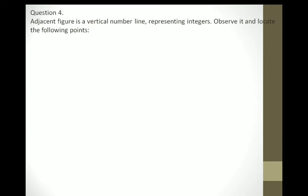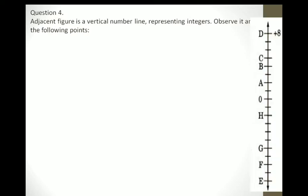Question number 4: The adjacent figure is a vertical number line representing integers. Observe it and locate the following points. This is the number line with 0 at center. Numbers going upward are positive: 1, 2, 3, 4, 5, 6, 7, positive 8. Numbers going downward are negative: negative 1, negative 2, negative 3, negative 4, negative 5, negative 6, negative 7, negative 8, negative 9, and E represents negative 10.